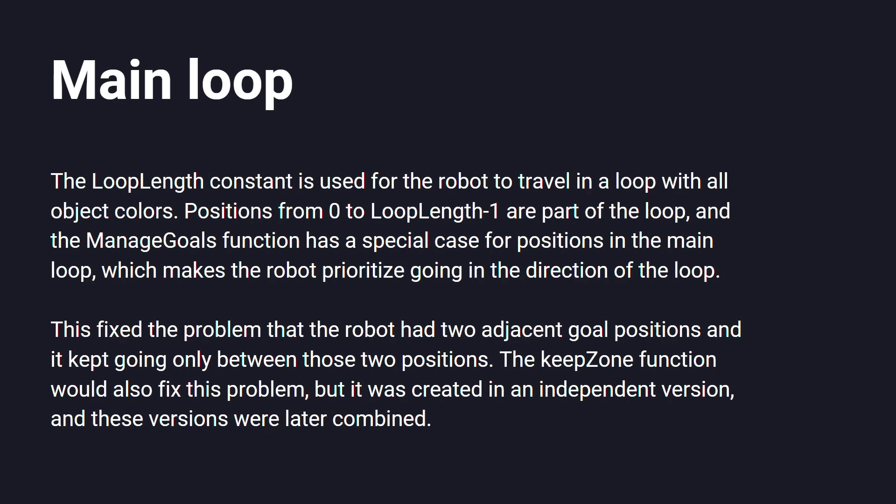The main loop was intended to fix a problem where the robot would loop between two positions, because those positions had objects it needed but the path between them no longer had any objects. Basically, the robot now travels along the first few positions which contain all the necessary objects.